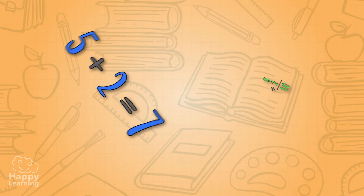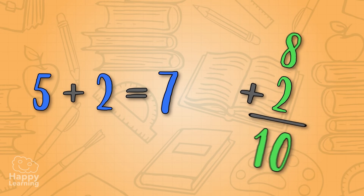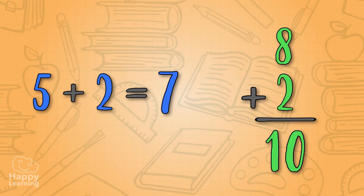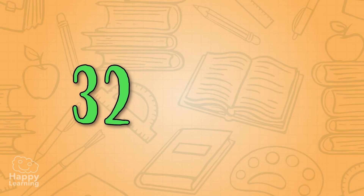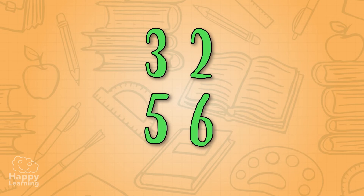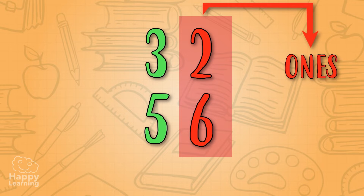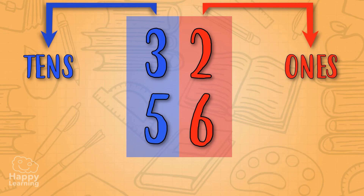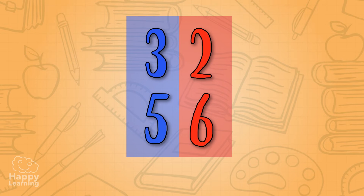Additions can be written vertically or horizontally. For now we've seen very simple additions, but it's time to do some that are a little more complicated. To add larger figures such as 32 plus 56, we place one summand under the other — ones under ones and tens under tens — like this. Then we add a plus sign.